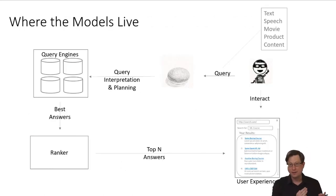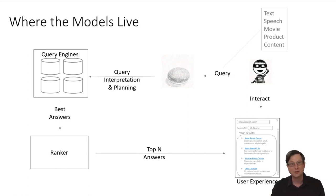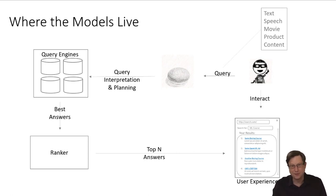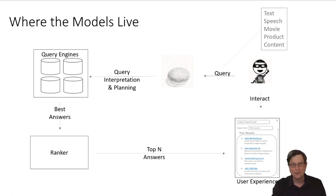Now let's talk about another important element: where do I put the machine learning models? What are the options and why? Looking at the different models in this system, what properties might make you want to put a model in the client the user is holding versus in a server back end? We're going to spend a few minutes going through that.